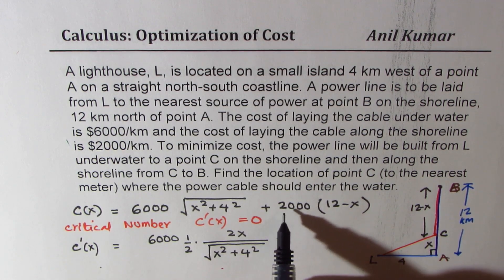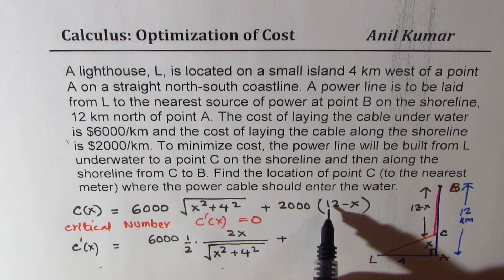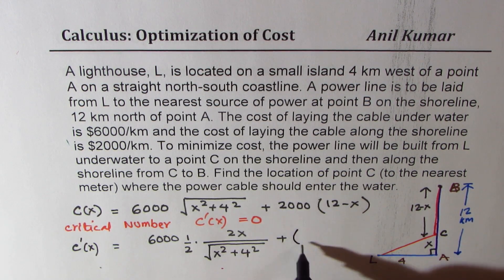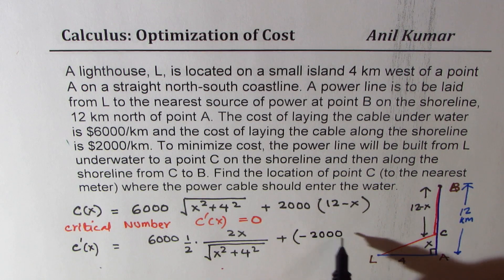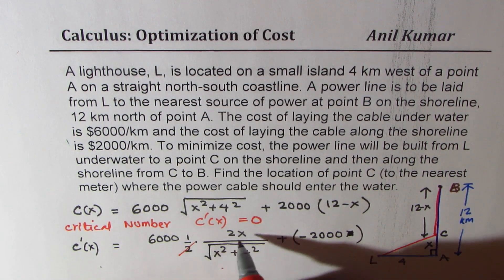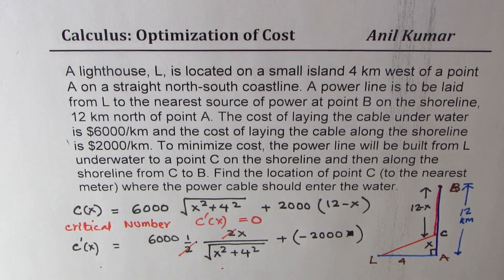If you expand this, 2,000 multiplied by 12 is constant, so its derivative will be 0, and derivative of minus x is minus 1, so we get here minus 2,000. So that becomes the derivative, and now to minimize the cost, we are going to equate it to 0, and then find the value of x. Let's move on to a new page and do our calculations.